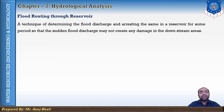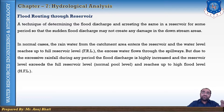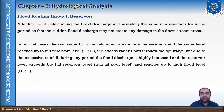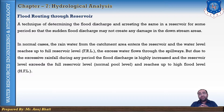Let us discuss reservoir routing in detail. In normal cases, rainwater from the catchment area flows towards the reservoir and the water level reaches up to the full reservoir level. The excess water flows through the spillway. Due to excessive rainfall, the flood discharge is highly increased and the water level exceeds the full reservoir level — the normal pool level — and reaches up to the high flood level. This volume of water is absorbed temporarily in the reservoir and then allowed to flow downstream through the spillway.